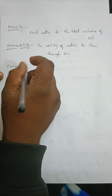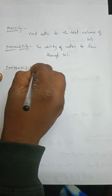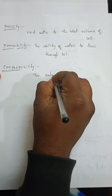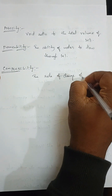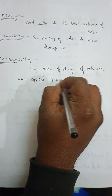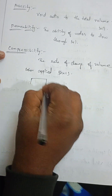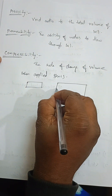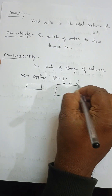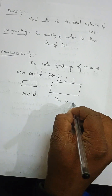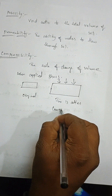Compressibility — the name itself tells you the meaning. When we compress a material, it is the rate of change of volume when stress or external factors are applied. For example, if a material is in its original shape and then a load, pressure, or stress is applied and it deforms and changes its volume, that change from the original shape to the compressed shape represents compressibility.